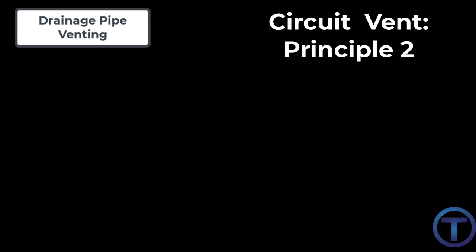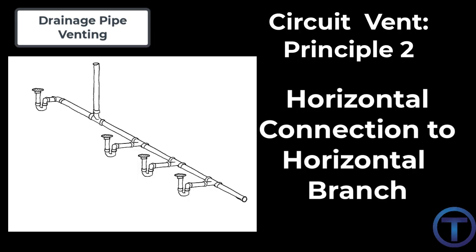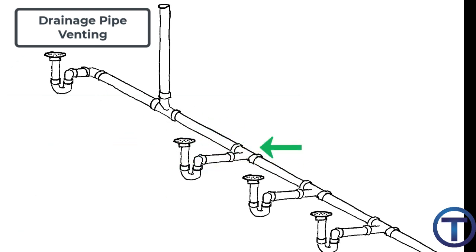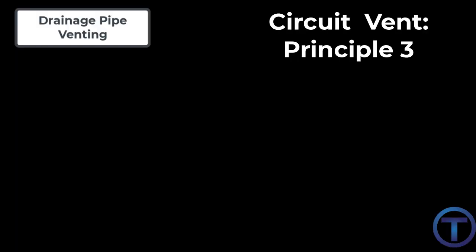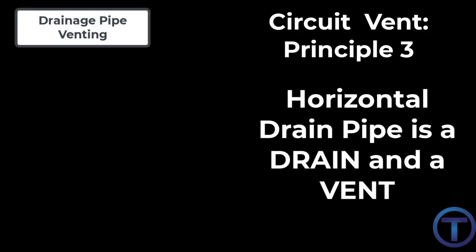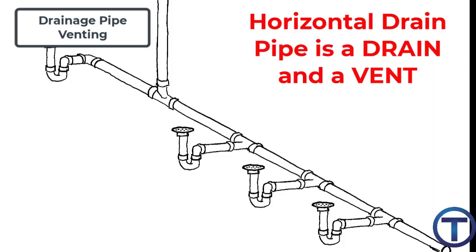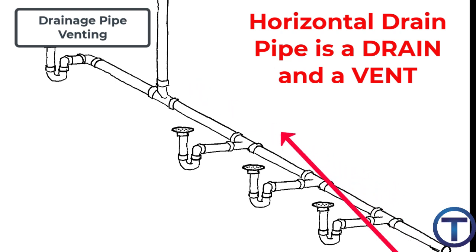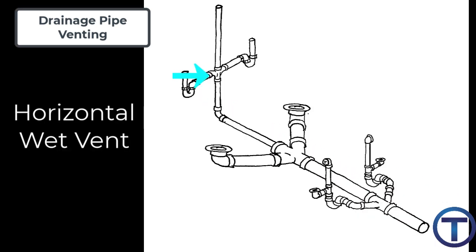Circuit vent principle two: each fixture drain shall connect horizontally to the horizontal branch being circuit vented. Please note this is horizontal connections to a horizontal pipe. Circuit vent principle three: the horizontal drain pipe is considered both a drain and a vent from the circuit vent downstream to the last fixture connection in the circuit. This is a lot like wet venting, where we're using the drain for both a drain and a vent.